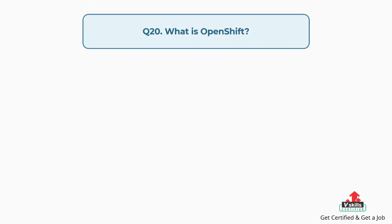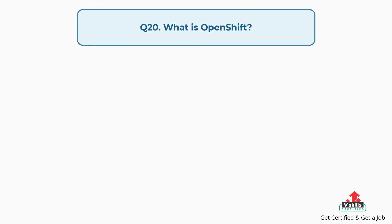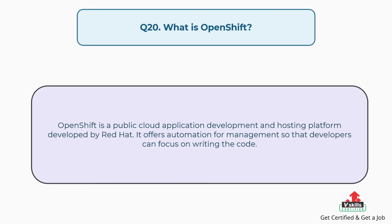Question number twenty: What is OpenShift? OpenShift is a public cloud application development and hosting platform developed by Red Hat. It offers automation for management so that developers can focus on writing the code.